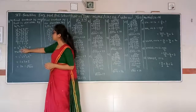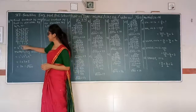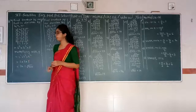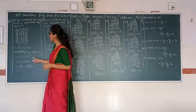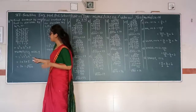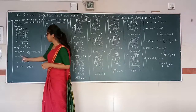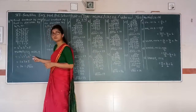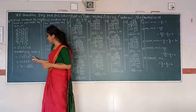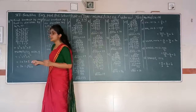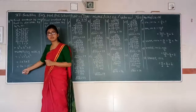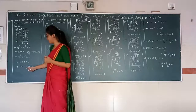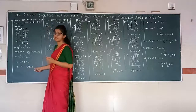We have to make all factors into pairs. Therefore, we need to multiply with 5. This gives us 2 squared times 3 squared times 5 squared. 2 times 3 times 5 gives 30.